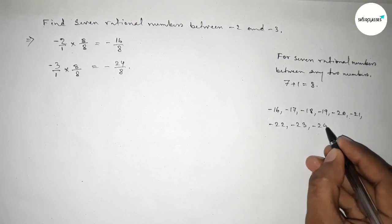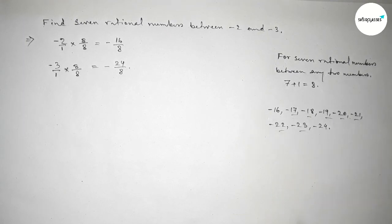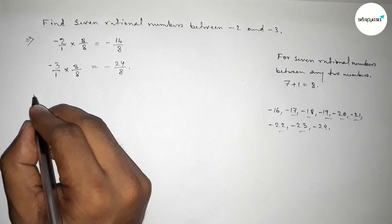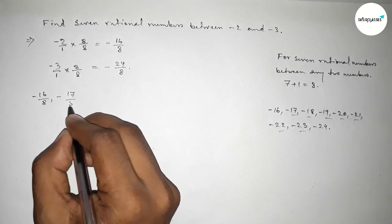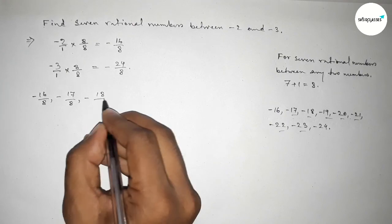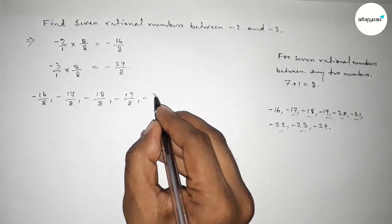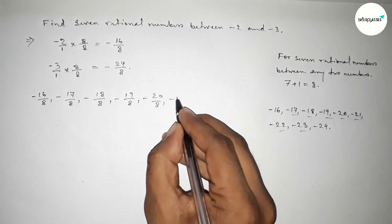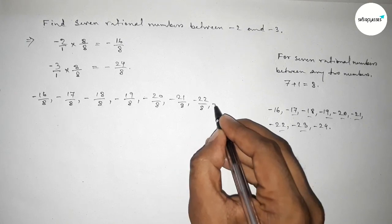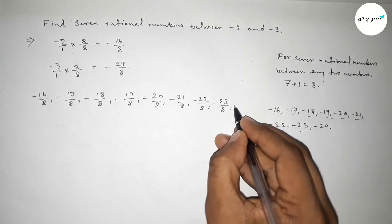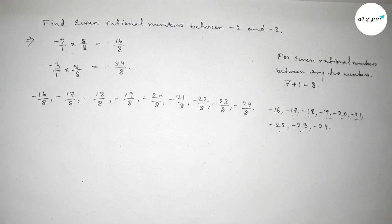Among these are the 7 negative integers. Now write down all the rational numbers: minus 16 over 8, minus 17 over 8, minus 18 over 8, minus 19 over 8, minus 20 over 8, and so on up to minus 24 over 8. Among these are the required 7 rational numbers.